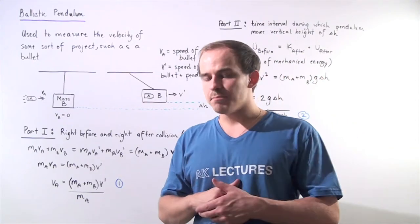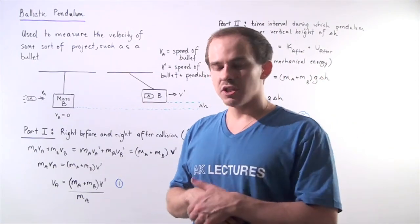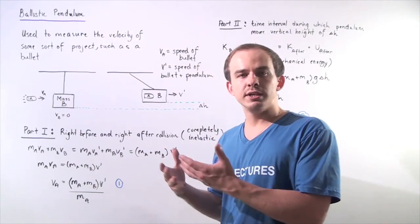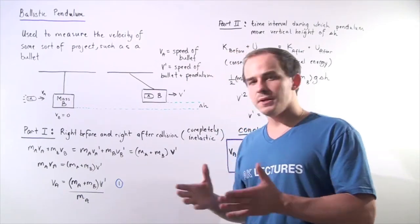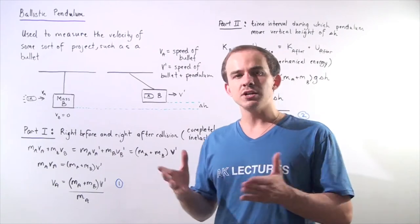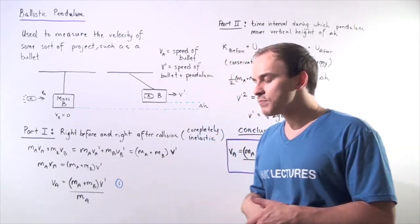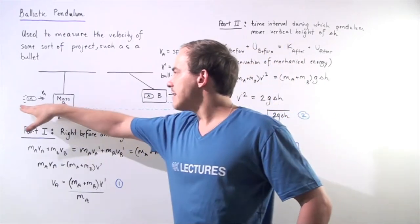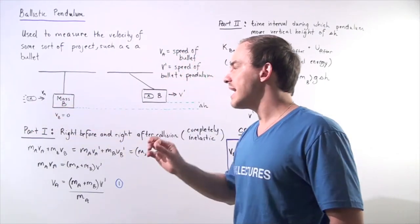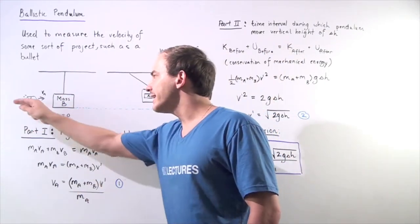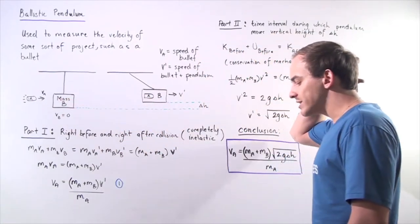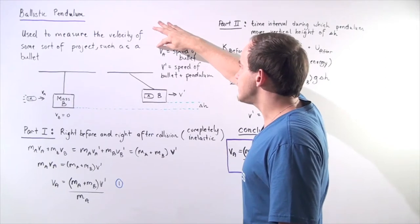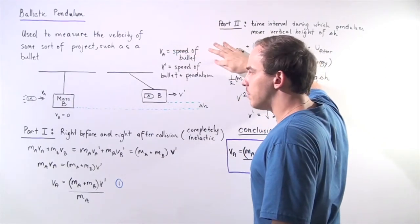So what exactly is a ballistic pendulum? A ballistic pendulum is essentially a device that we can use to measure the speed of a moving projectile, such as a moving bullet. So let's suppose we have the following setup. We have a bullet with mass ma that is traveling in the positive direction along the x-axis with velocity va — that is the speed of the bullet.